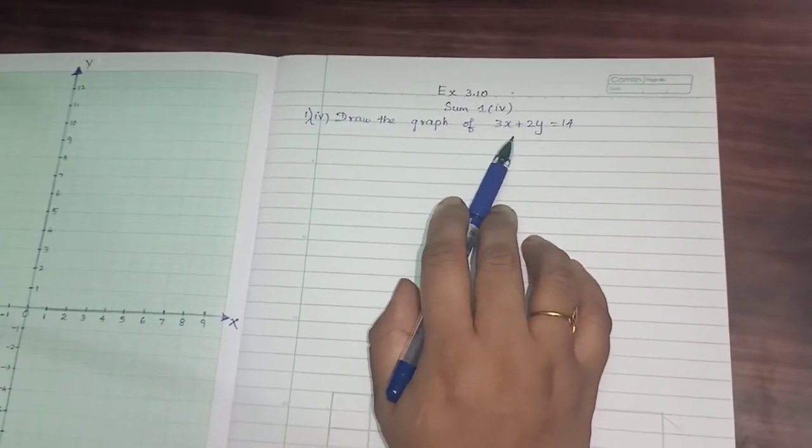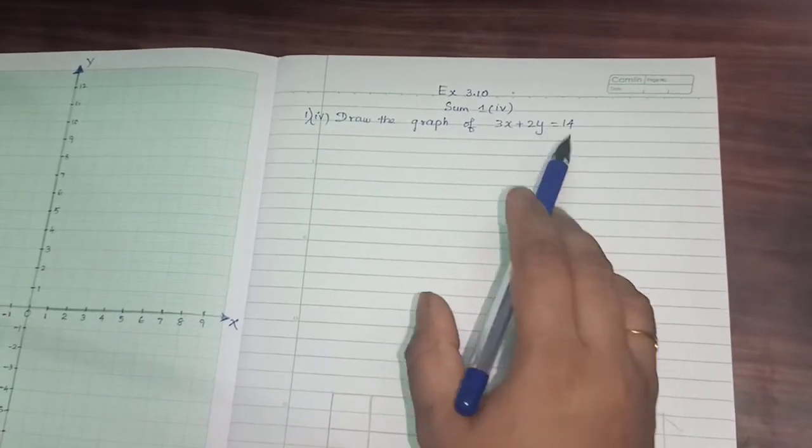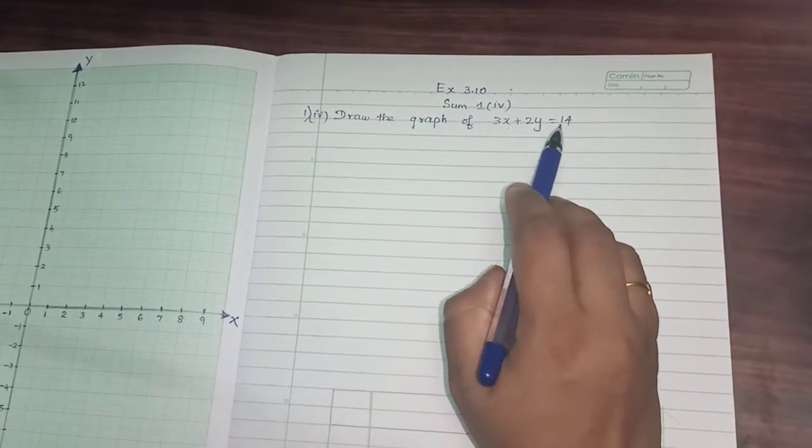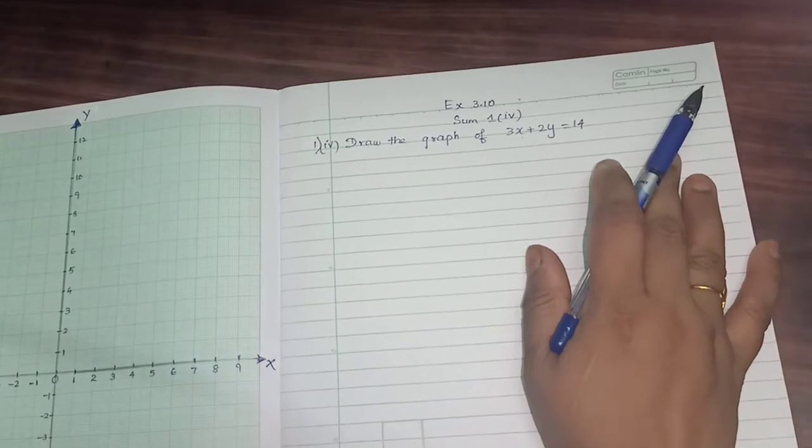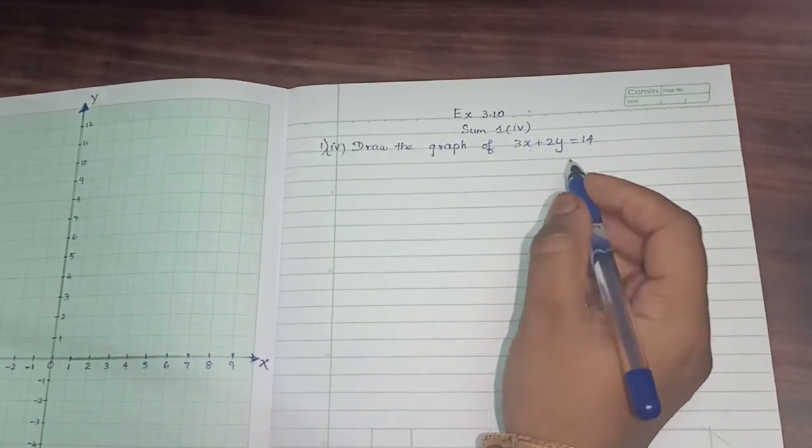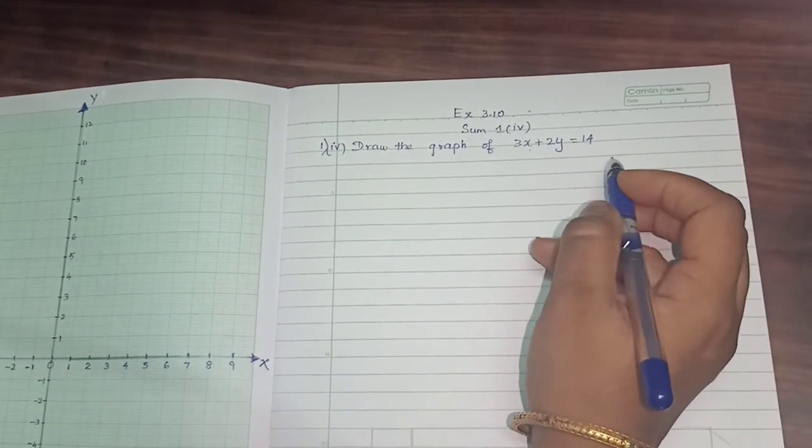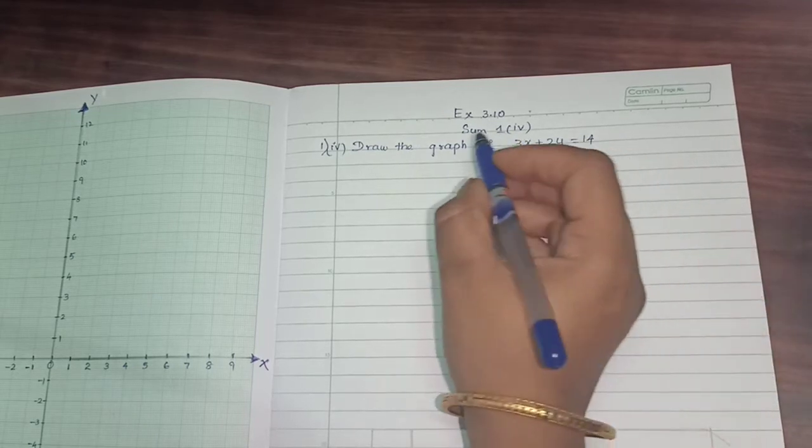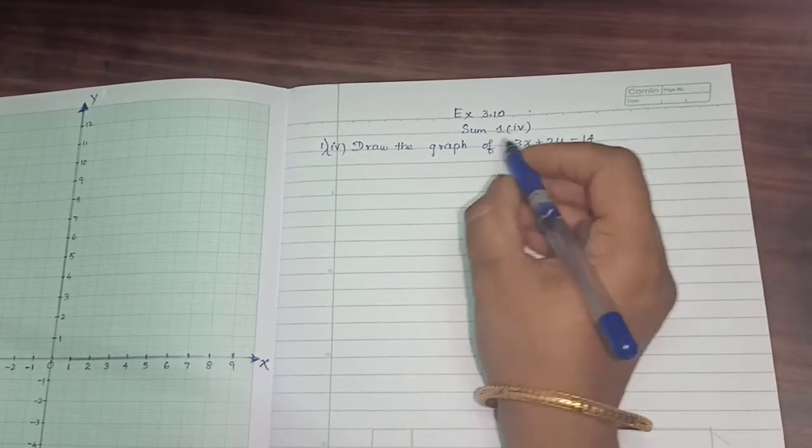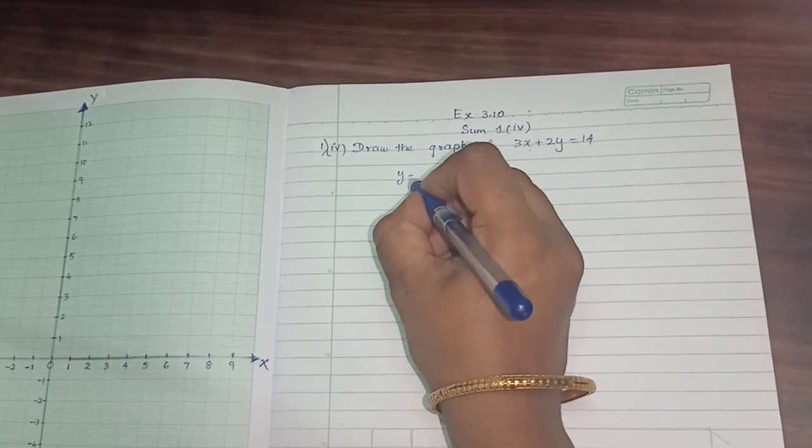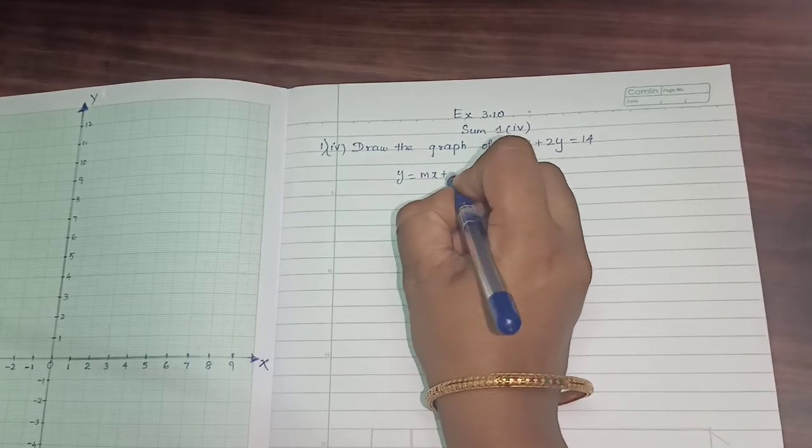This is also a linear equation in 2 variables, right? We have 2 variables x and y. But first thing what we have to do, you have to convert this in y equals mx plus c form, the general form of linear equation.